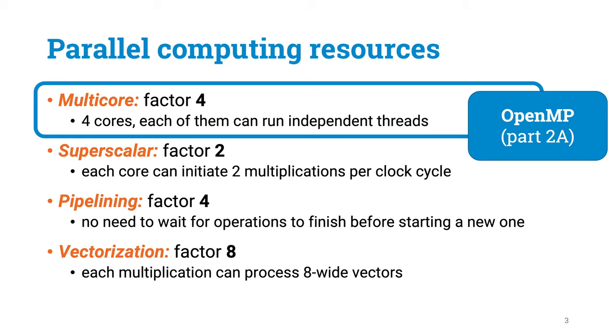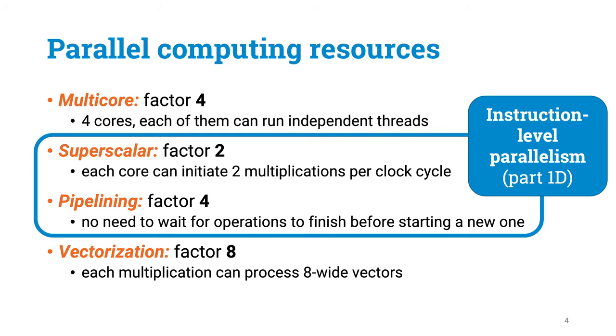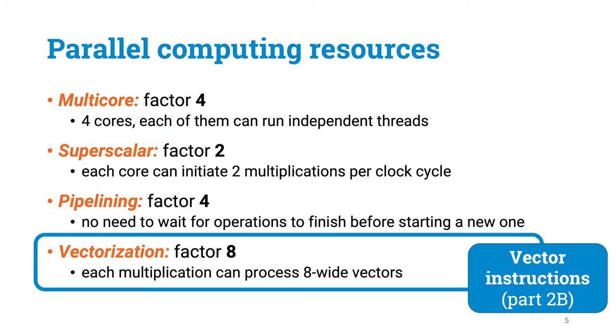In part 2a we learned to use OpenMP to create multiple threads, so that we can benefit from multiple CPU cores. In part 1d we learned about instruction-level parallelism, which makes it possible to benefit from pipelined superscalar execution units. And in part 2b we learned about vector operations.